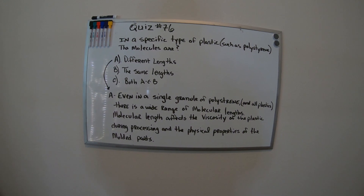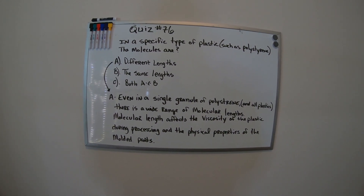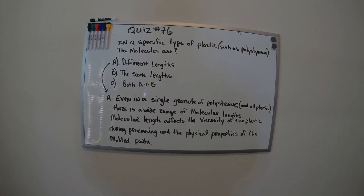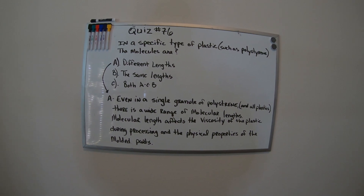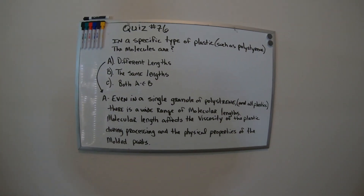Even in a single granule of polystyrene — and all plastics — there is a wide range of molecule lengths. Molecule lengths affect the viscosity of the plastic during processing and the physical properties of the molded parts. All your molecules are different sizes; they range and are never the same length.